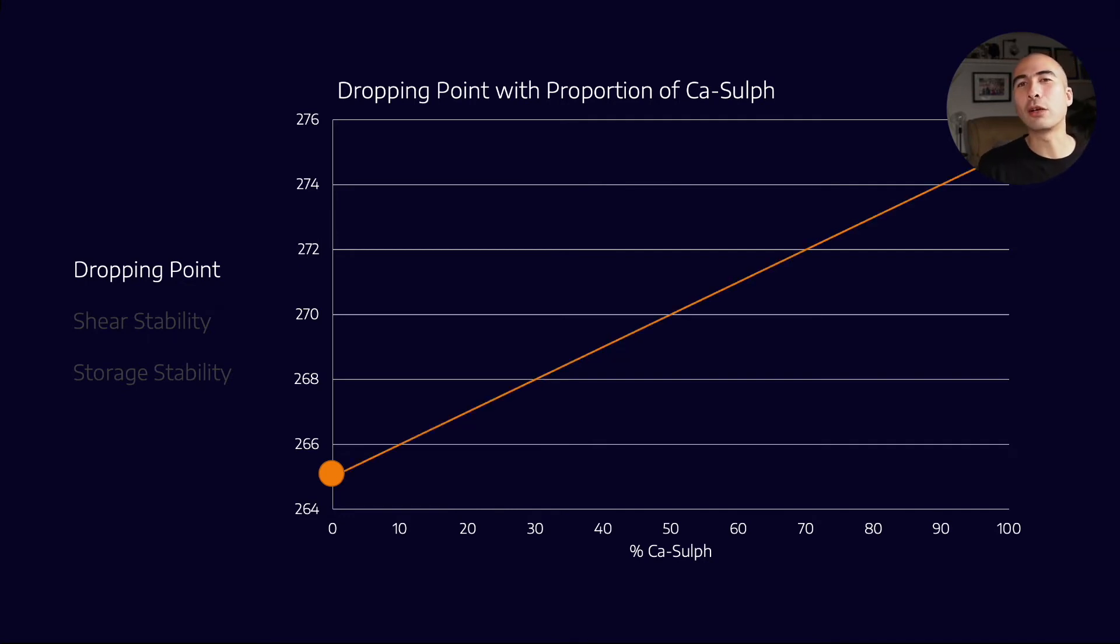So if you were to draw a straight line between them, you would expect that as you increase the proportion of calcium sulfonate, you would expect that it would kind of match up on this line. If you didn't see that, and instead the proportions sat substantially below the line, that might be an indication that you have an incompatibility problem between the two greases. Now, this kind of testing is very commonly done across the industry.